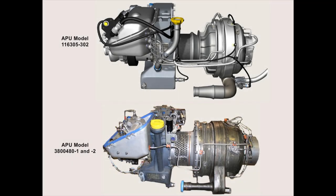The auxiliary power unit model 116305-302 is one of two different APUs that may be installed on the UH-60MIC aircraft. Any aircraft can have either APU installed. Therefore you should be familiar with both APUs and their different references.